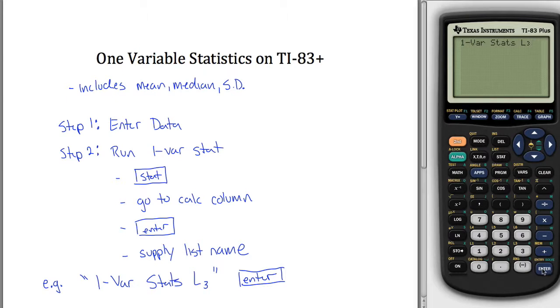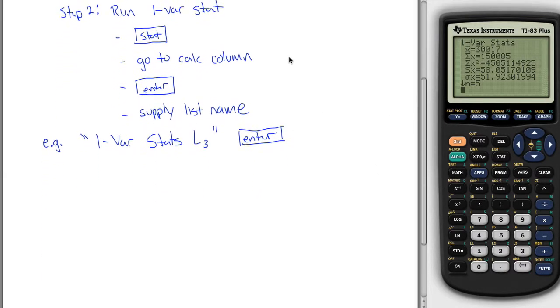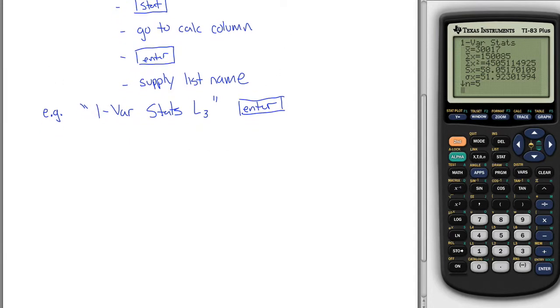And what will happen when you do that is you get a bunch of one variable statistics. I can tell you what a bunch of these things mean. X bar is our sample mean. So what that's saying is if we added up all those five observations and divided by five, we'd get this number.